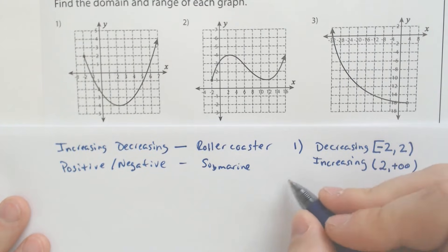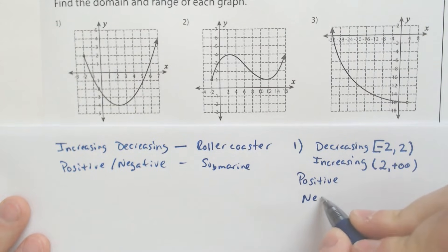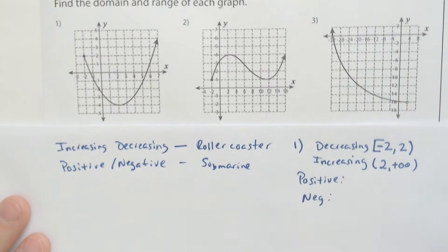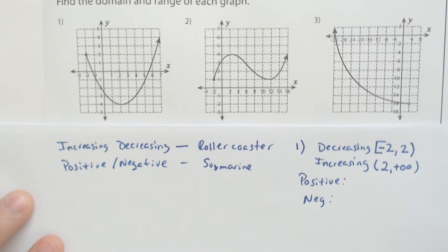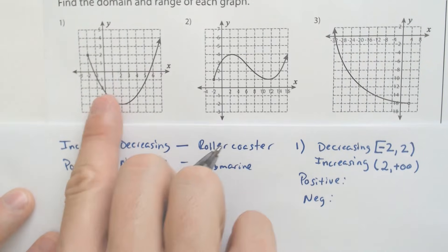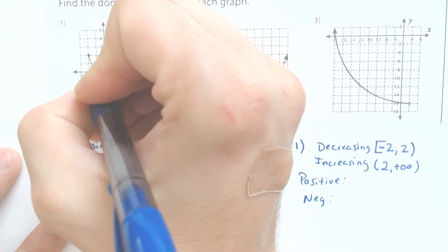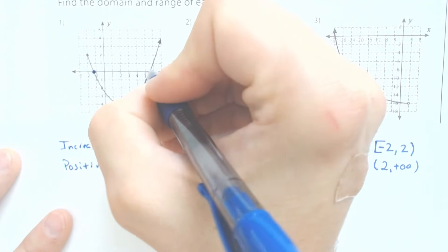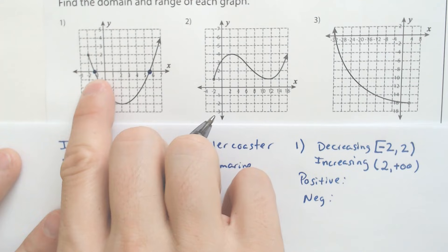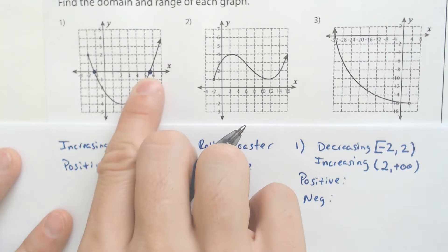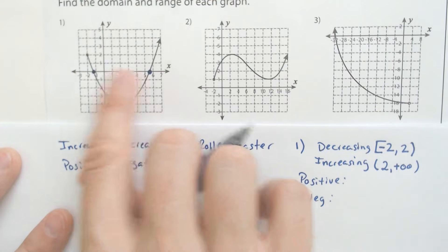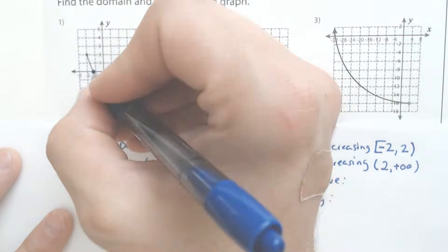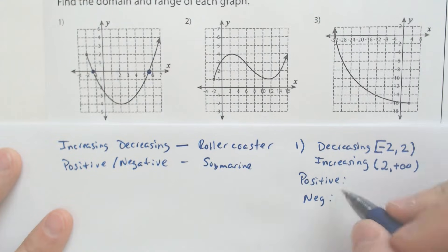Versus if we're talking about positive and negative, we think like a submarine. When are we above the water? When are we below the water? And I'm actually going to start with the negative because we're below the water from here to here, which looks like negative 1.5 to 5.5. So that is when we were below the water on that interval. That's when we dip down and then swam back up.